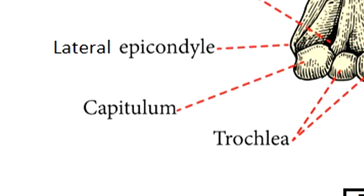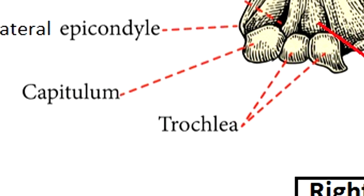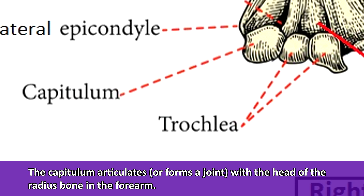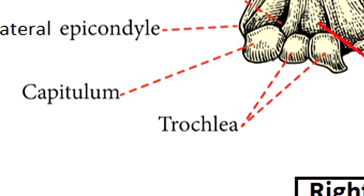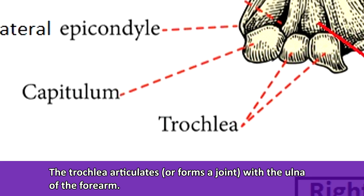Now let's talk about the condyles. The capitulum is a small rounded protuberance located laterally on the distal end of the humerus, which articulates or forms a joint with the head of the radius bone in the forearm. The trochlea is located medially or toward the midline of the body. It kind of looks like a trophy on its side — that's a helpful way to remember it. The name trochlea actually refers to a spool or pulley, and this is the part of the humerus that articulates with the ulna bone of the forearm.